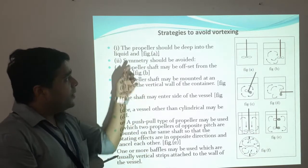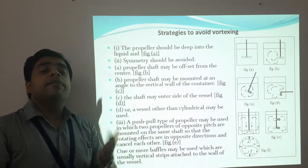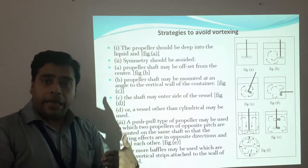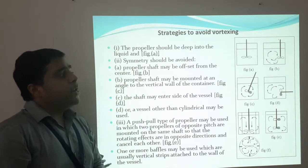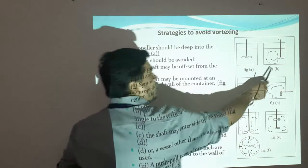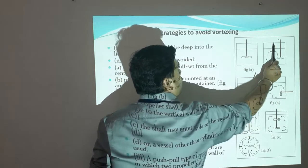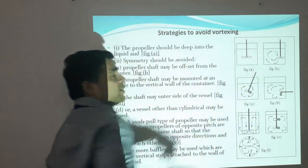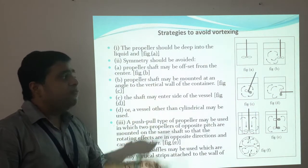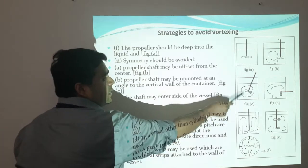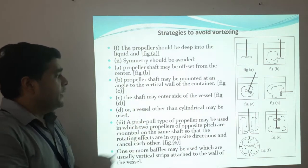Next, symmetry should be avoided. The cause of vortexing is the symmetrical positioning of the impeller. How can symmetry be avoided? The propeller shaft may be offset from the center — not at the center but at an off-center position, somewhat at a distance. Next, the propeller shaft may be mounted at an angle to the vertical wall of the container — that is also another arrangement.